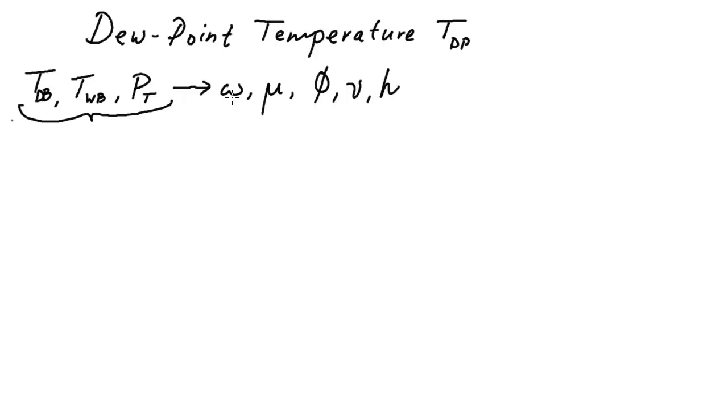And with those pieces of information, we were already able to derive a formula for these five important parameters for psychrometrics: the specific humidity ratio omega, mu, the degree of saturation, relative humidity, specific volume, and enthalpy. And we're on our last major property, which is the dew point temperature.